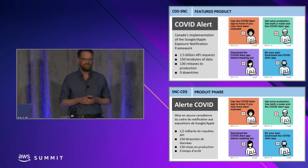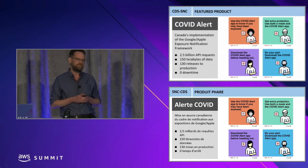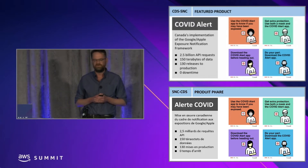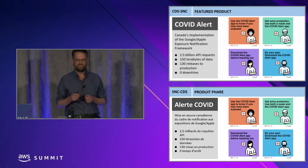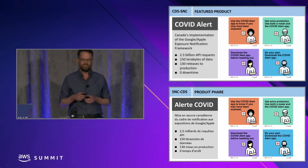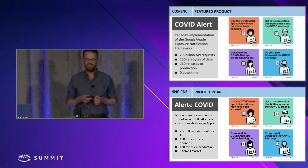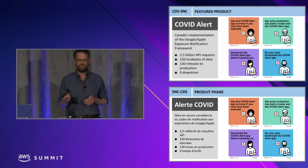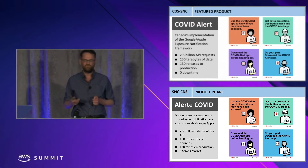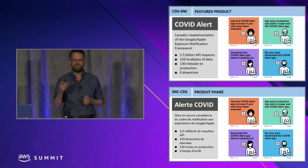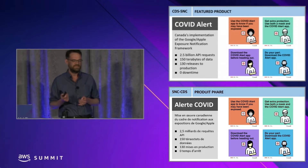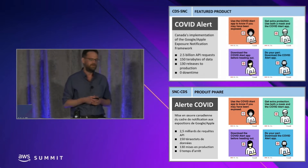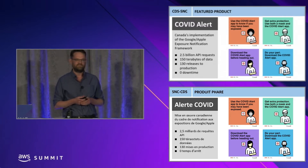The second big product we had is COVID Alert — Canada's implementation of the Google-Apple exposure notification framework. It was split into multiple parts including a mobile app and a server component. During our deployment of the COVID Alert server from summer 2020 to summer 2022, we generated some impressive data: 2.5 billion API requests, over 150 terabytes of data through the wire, 130 releases to production — almost one every three days — and through all of those, the thing I'm most proud of is we had zero downtime.